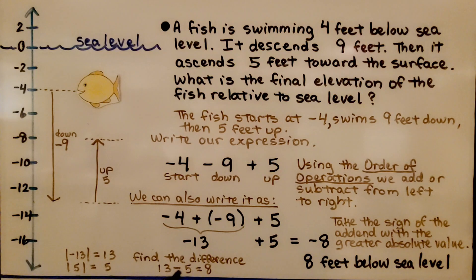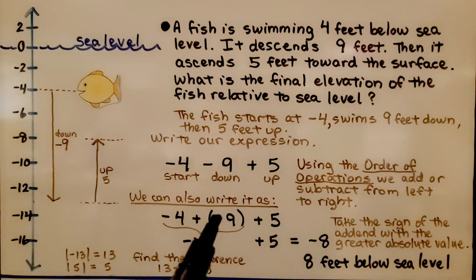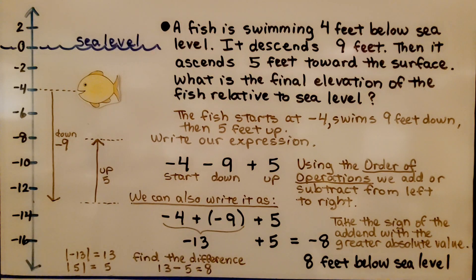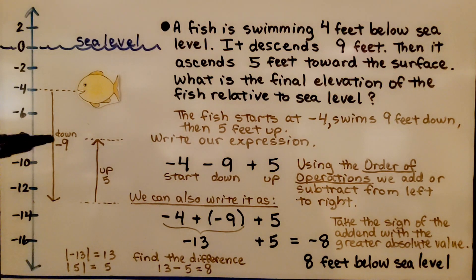13 minus 5 is equal to 8. We take the sign of the add-in with the greater absolute value — that would be negative 13. Either way, it's negative, so we have negative 8. The fish is 8 feet below sea level. Sea level is 0, and the fish is at minus 8.